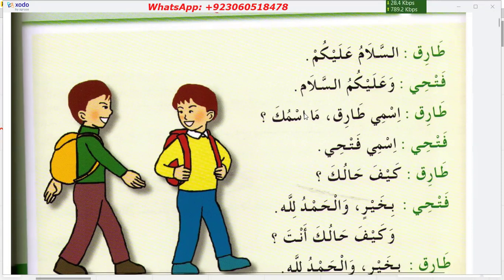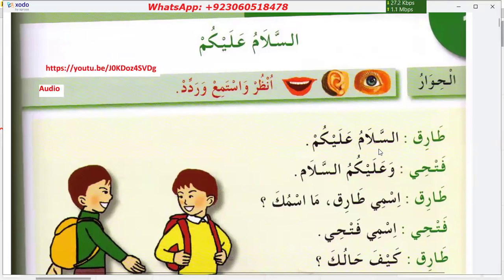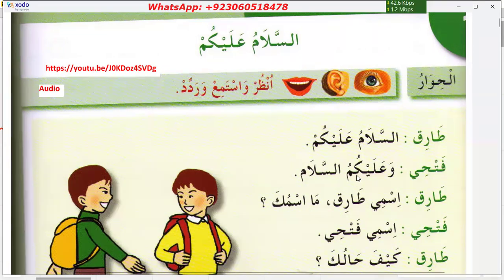So Tarik says 'Assalamualaikum.' Note down the meaning: 'Assalam' means peace, 'alai' means upon, 'kum' means you — so 'Assalamualaikum' means 'peace be upon you.' The reply is 'Walaikum assalam' — and peace be upon you too.